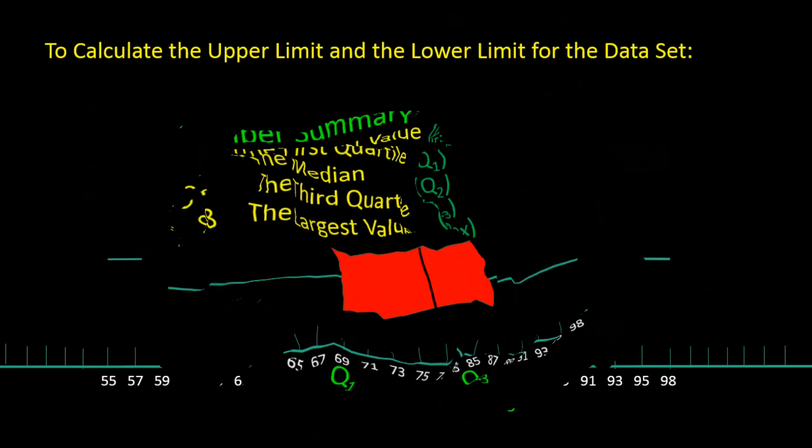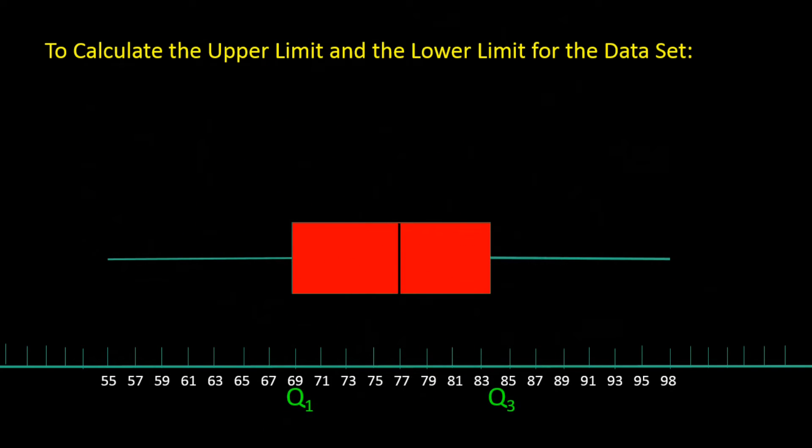We may also want to calculate the upper limit and lower limit to the data set so we know where most of the data lie. Any data outside of the upper and lower limits will be considered outliers. These may just be extreme values, or they may be values that were not recorded properly, meaning mistakes.